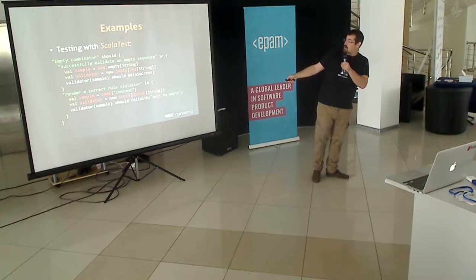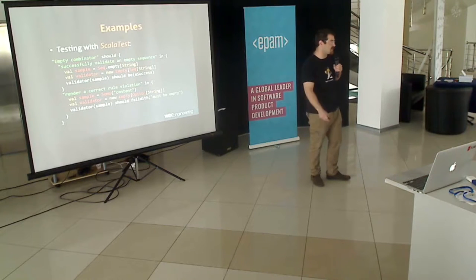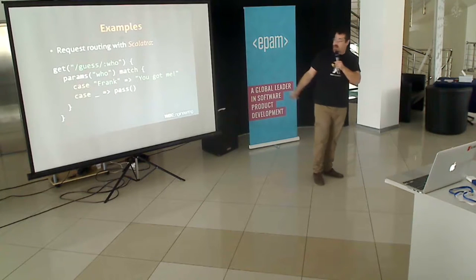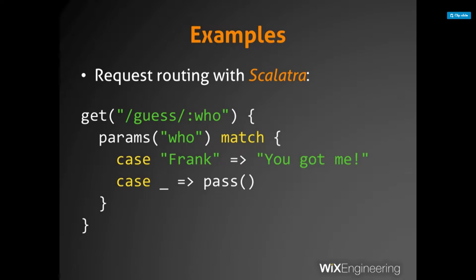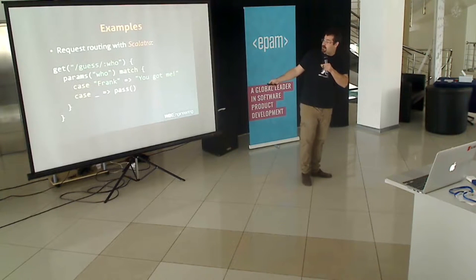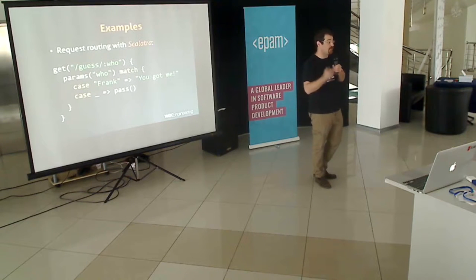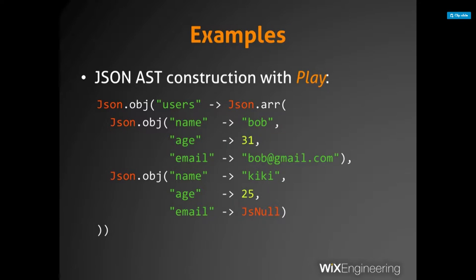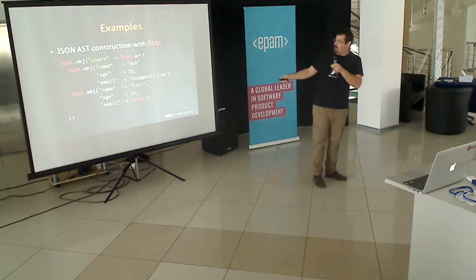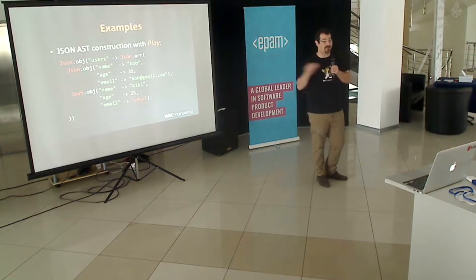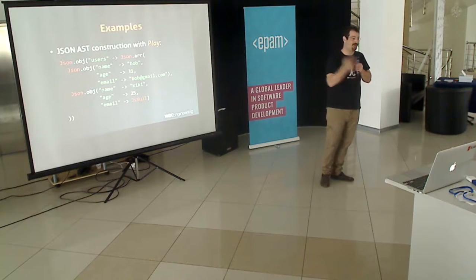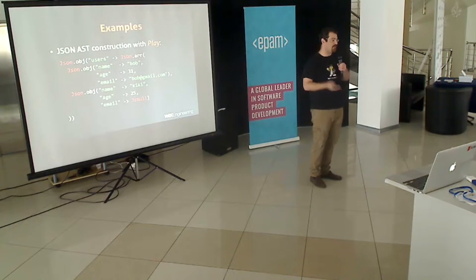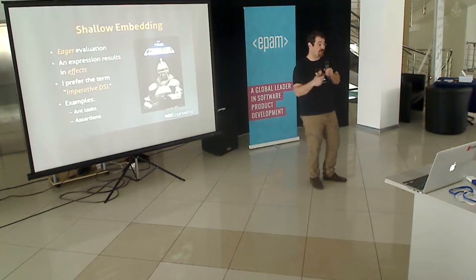Same thing with 'should be' and the various niceties you get with ScalaTest or Specs2. Another example might include Scala or Spray for HTTP request routing, where you typically write your requests in a domain-specific language designed for that. A third example is building JSON — this is valid Scala code, but it doesn't really look like Scala. This arrow thing typically produces a tuple, not a JSON field.